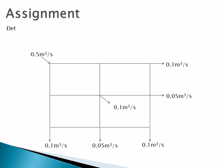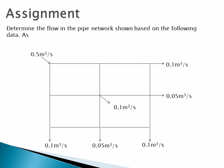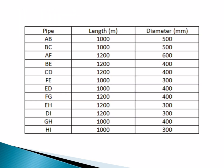For the assignment, we will determine the flow in the pipe network shown based on the following data. Assume C is equal to 120 for all pipes. This is the system of the pipe network and we are going to use this data.